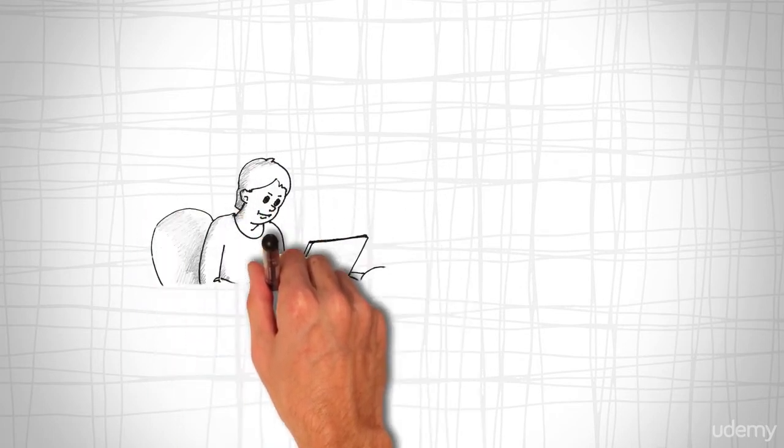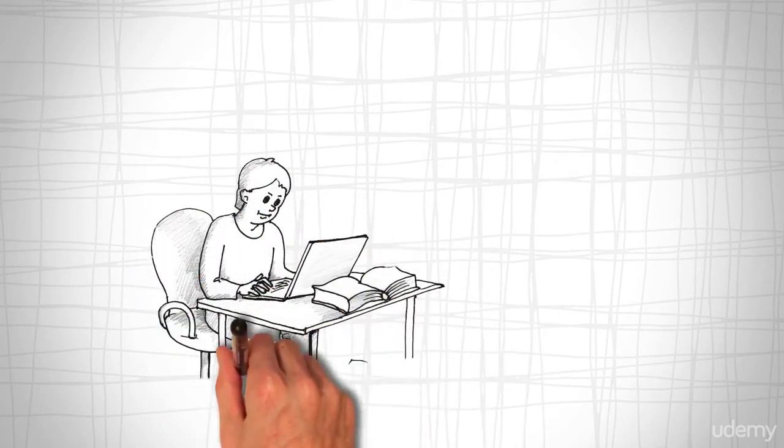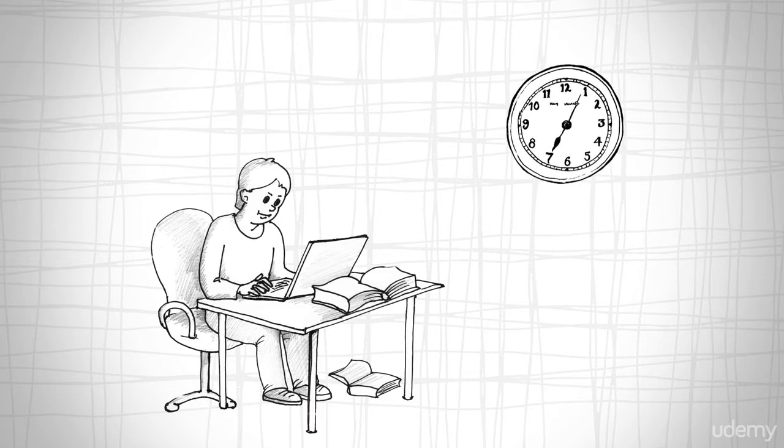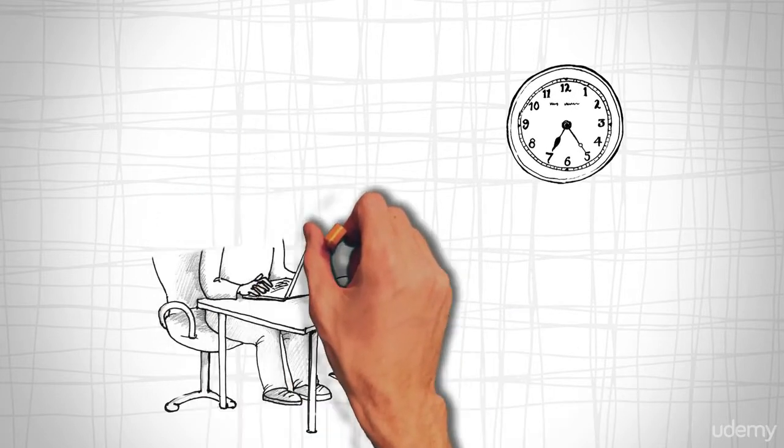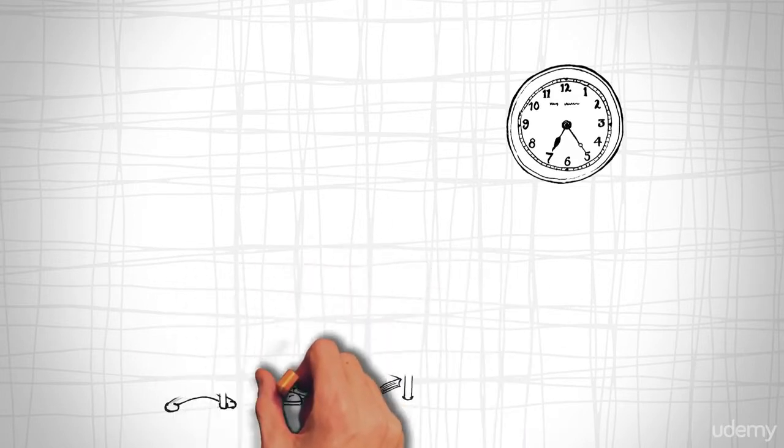A break. The Pomodoro technique is a common time management technique that helps with procrastination by breaking down every task into 25-minute blocks. After 25 minutes, you get a 5-minute break.